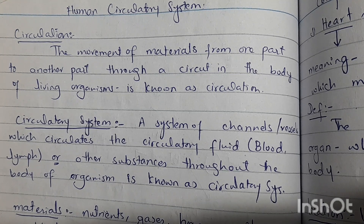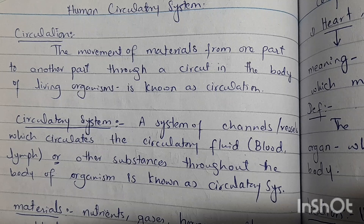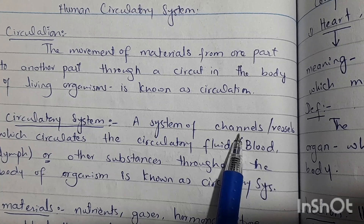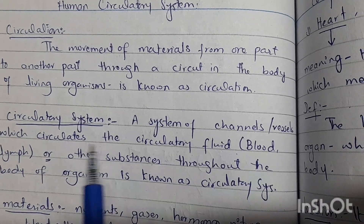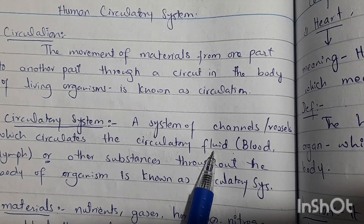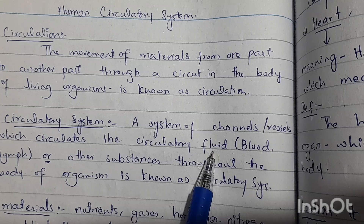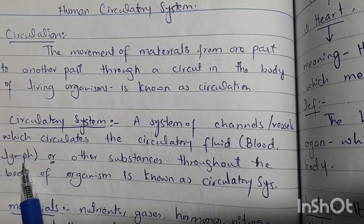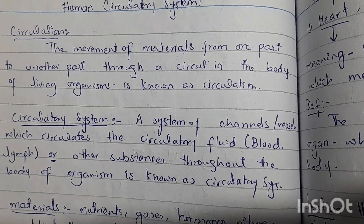Now, in our body, we call this the circulatory system. In our body, we are talking about channels or vessels which circulate the circulatory fluid. What is going on in these pipes? The circulatory fluid, which can either be blood or lymph, and other substances, is transported throughout the body of organisms — this is known as the circulatory system.